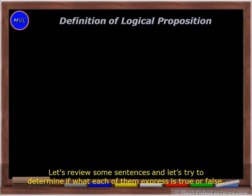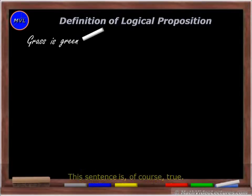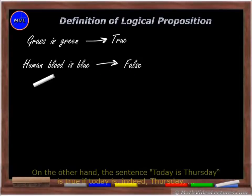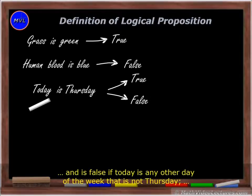Let's review some sentences and try to determine if what each of them expresses is true or false. For example, consider the sentence 'grass is green.' This sentence is, of course, true. However, the sentence 'human blood is blue' is, without a doubt, false. On the other hand, the sentence 'today is Thursday' is true if today is, indeed, Thursday, and is false if today is any other day of the week that is not Thursday.